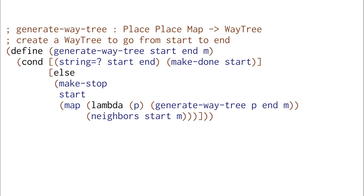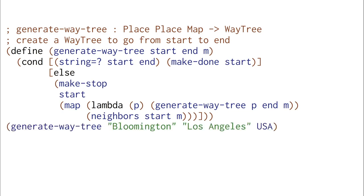Last time we also wrote the generate way tree function. This simply checks if we've already finished, in which case we construct a make done. Otherwise we construct a new stop and we generate new way trees for each of the neighbors of the place that we're at. Unfortunately, this version of generate way tree ran forever when we tried to create a way tree going from Bloomington to Los Angeles. So that didn't work.